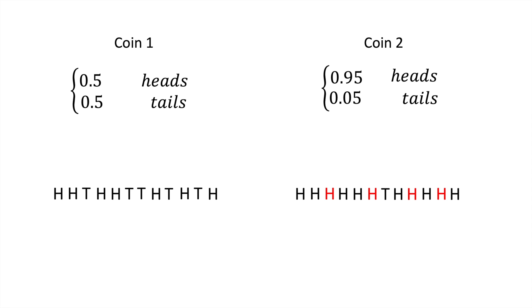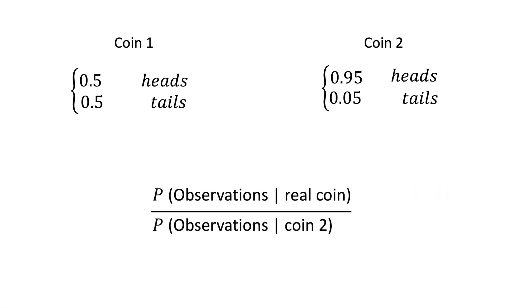If the output probabilities are similar, then the coins might be similar, but if the likelihood is significantly smaller for the second coin, then the coins might be very different. A natural thing to calculate would then be this ratio here, which compares the likelihood of the observations for each coin.